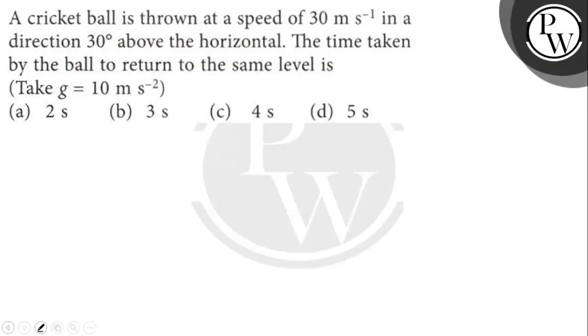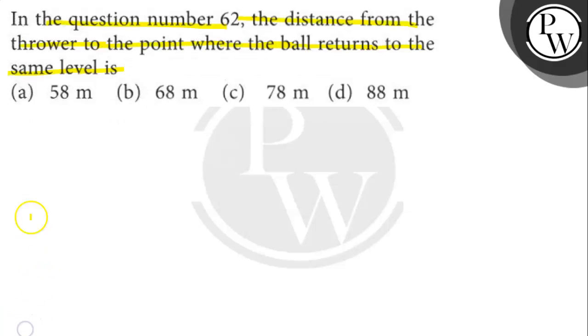The data given, we will know the answer. What is given? Given, the speed and velocity is 30 meter per second, and our angle theta is 30 degrees, and our g value is 10 meters per second square.